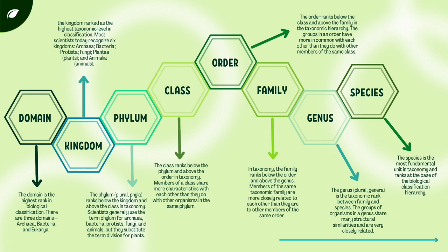From the most general to the most specific, these are: domain — the highest level, constituting 3 domains of life; kingdom — the second level, constituting 5 kingdoms; phylum — a group of related classes; class — a group of related orders; order — a group of related families; family — a group of related genera; genus — a group of related species; and species — a group of similar organisms.